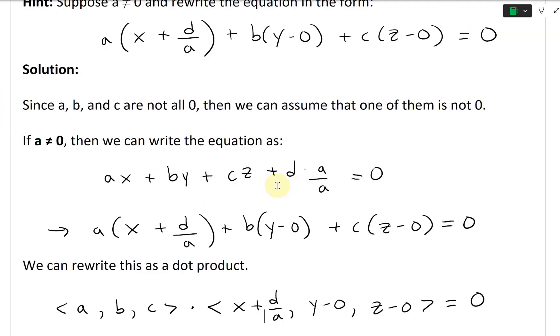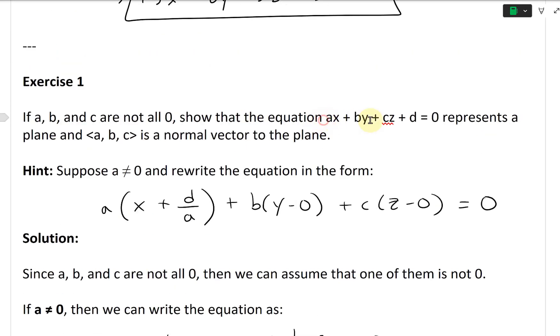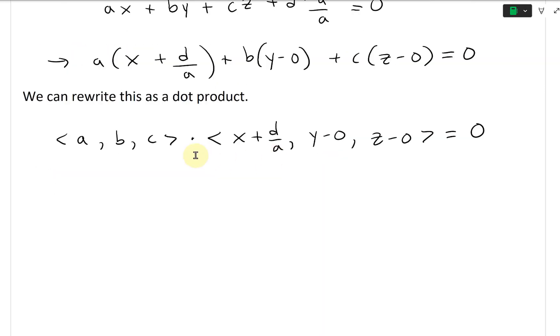This vector <a, b, c> is our normal vector because the dot product is zero. This is going to be our normal vector n. Now we can continue further and separate the addition and subtraction.